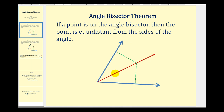So if the red ray is the Angle Bisector and we consider a point on the Angle Bisector, this theorem tells us that the point would be equidistant from the two sides of the angle — the two blue rays — meaning this green segment here would be congruent to this green segment here.